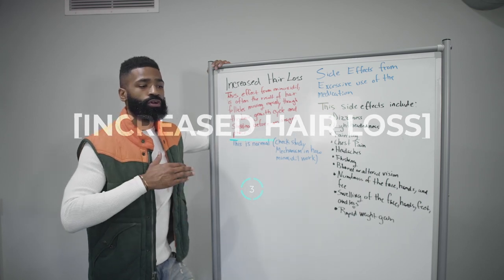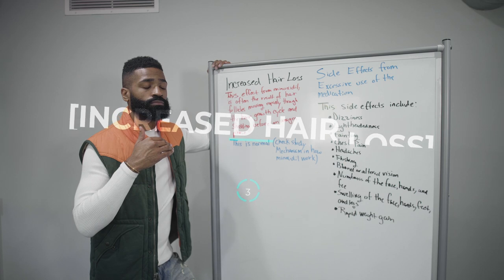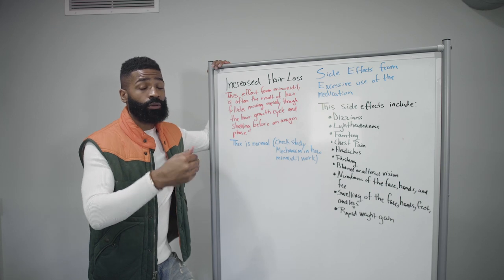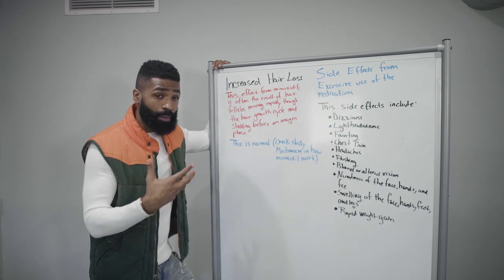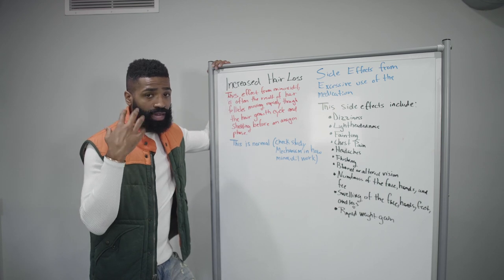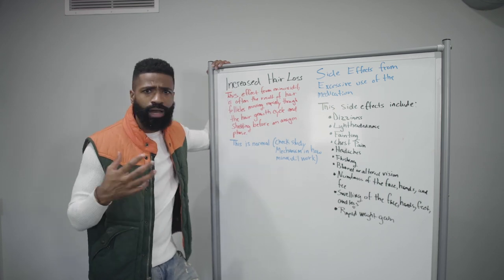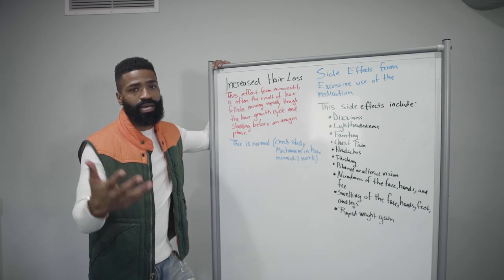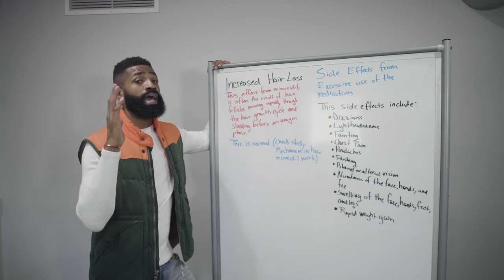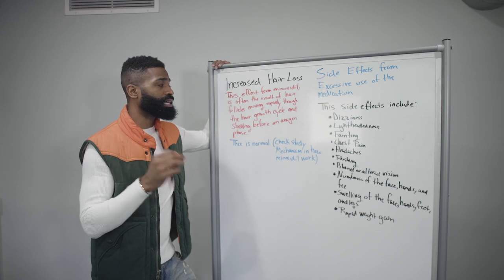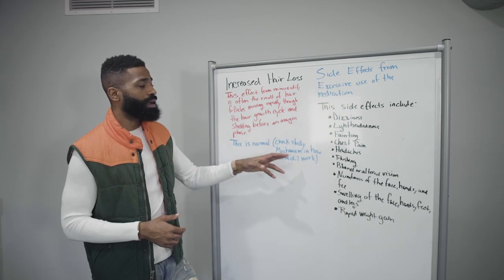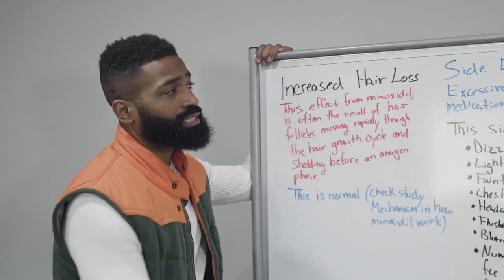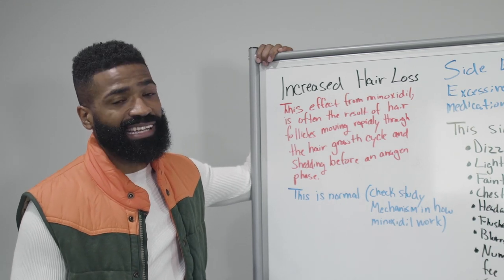The third side effect is increased hair loss. As mentioned, minoxidil takes your hair from the telogen phase to the anagen phase — from shedding to growth — and it moves through this hair growth cycle pretty rapidly. So you will experience increased hair loss and wonder why your hair is shedding if this is supposed to make it grow. It's because it's removing hairs that aren't serving you at that time. There is a study called 'Mechanism and How Minoxidil Works' that covers this process — there should be a link in the description.